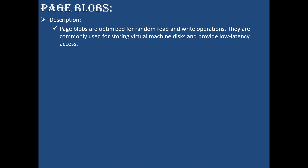When you are using a virtual machine, you keep writing and reading data using that machine. The machine stores data on a back-end disk. To read and write data quickly, we need a specialized blob — that is the page blob — which helps quickly read data from the hard disk.